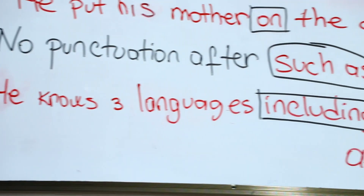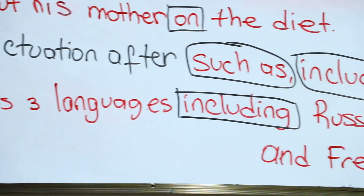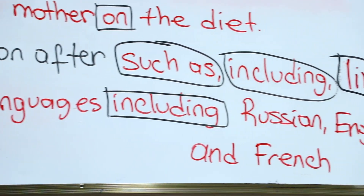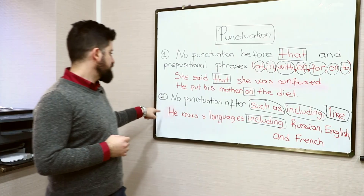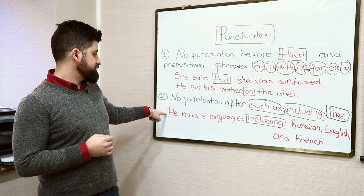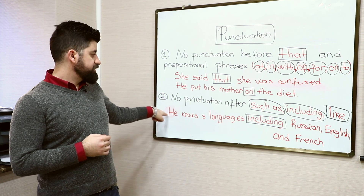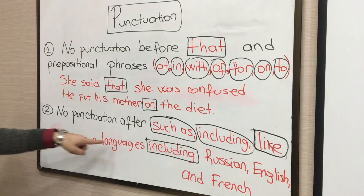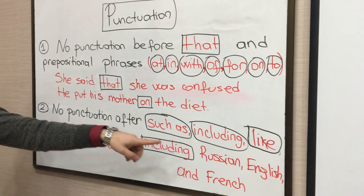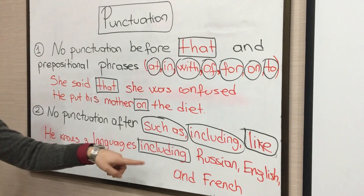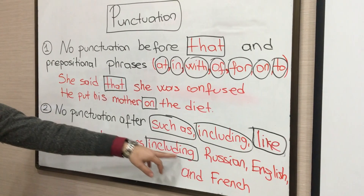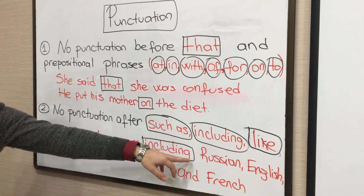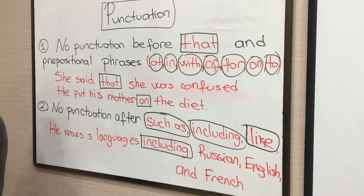The second rule is: never use any punctuation after 'such as,' 'including,' or 'like.' For example: 'He knows two languages, including Russian, English, and French.' As you can see, there is no punctuation after 'including.'